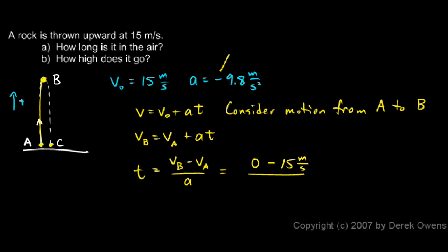Then the acceleration, remember the acceleration is negative, so it's negative 9.8 meters per second squared. So I have a negative number in the denominator as well. And when I divide negative 15 by negative 9.8, I get a positive 1.53.